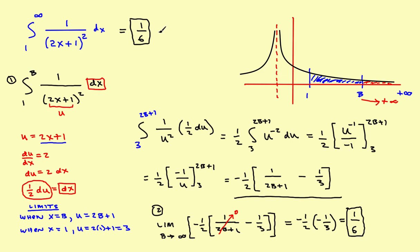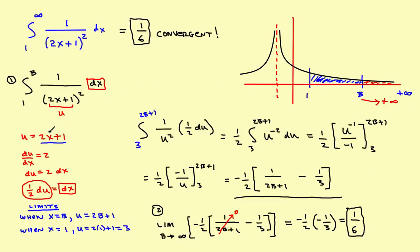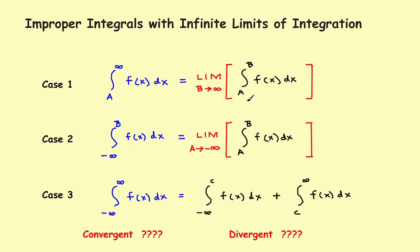This one-sixth is the actual area under the curve all the way out to infinity. Since the result settles on a fixed number, the integral is convergent. Looking at our rules: if you evaluate the integral and it settles on a fixed number, the limit exists and the problem is convergent. If it had gone off to infinity, the limit wouldn't exist and it would be divergent. The real trick here is just a u-substitution. Use the two-step process: first evaluate the definite integral from one to B, then take the limit as B approaches infinity to get the final answer of one-sixth.